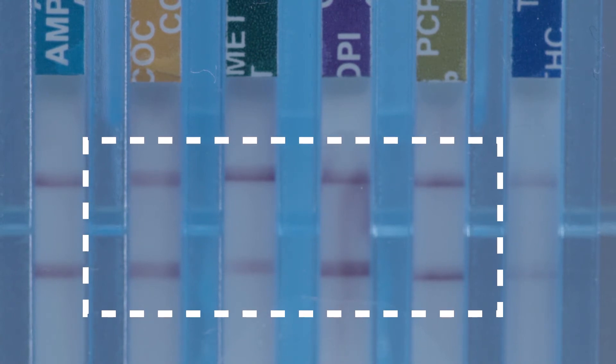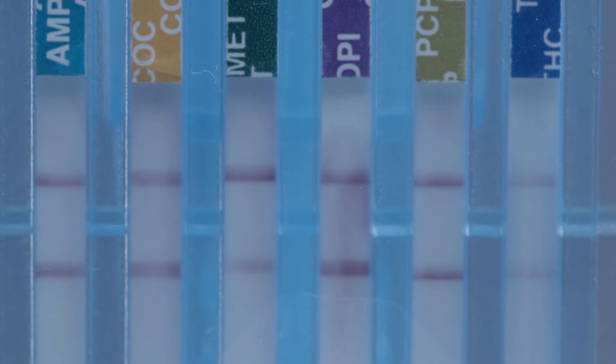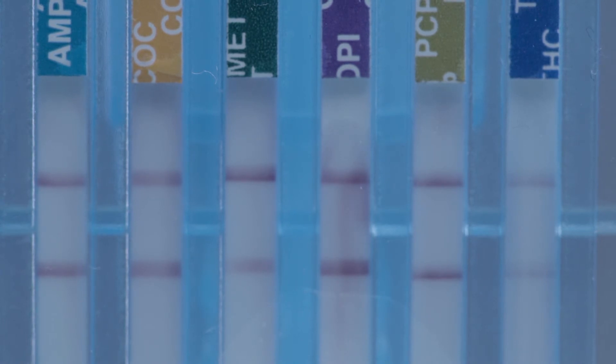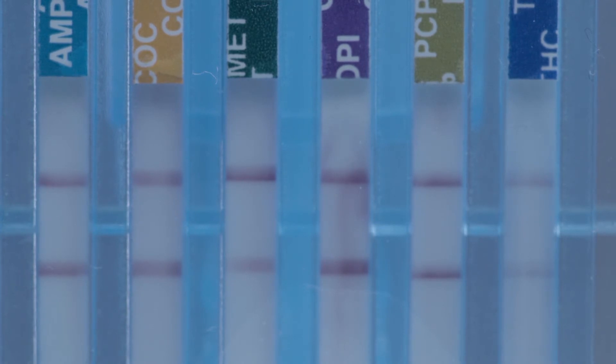A negative result can be read as soon as the control and test lines appear. Any test line, regardless of intensity, color, or size, is a line and indicates a negative result. It is normal for line intensities to vary for different drug strips due to the test chemistry.